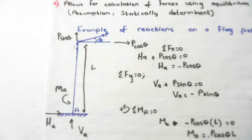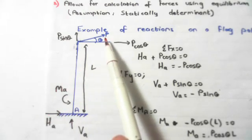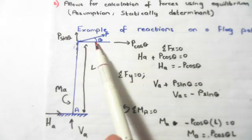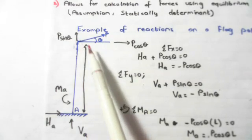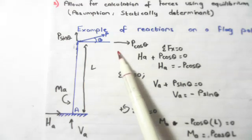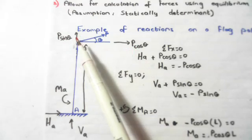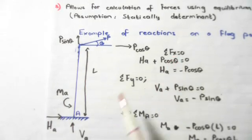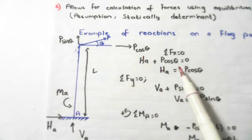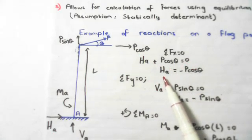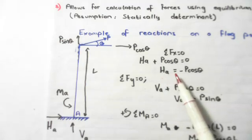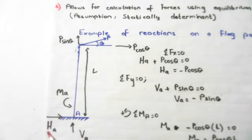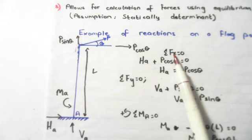We call the bottom point A, so we have a vertical reaction VA, a horizontal reaction HA, and a moment MA about A. The flagpole has height L and is subjected to force P at angle theta to the horizontal. Since P is at an angle, we split it into two components: a horizontal force P cos theta, and a vertical force P sin theta. We then apply equilibrium horizontally: HA + P cos theta = 0, giving HA = −P cos theta, since both HA and P cos theta are horizontal.